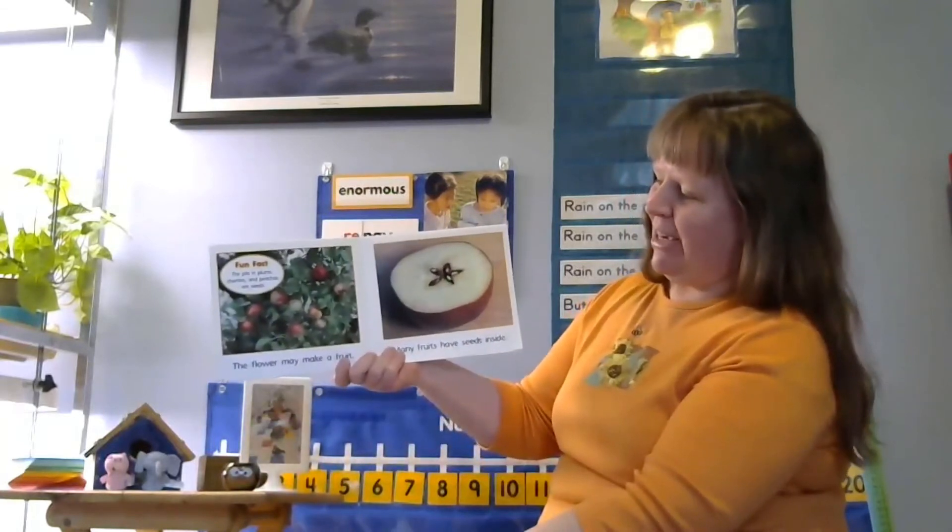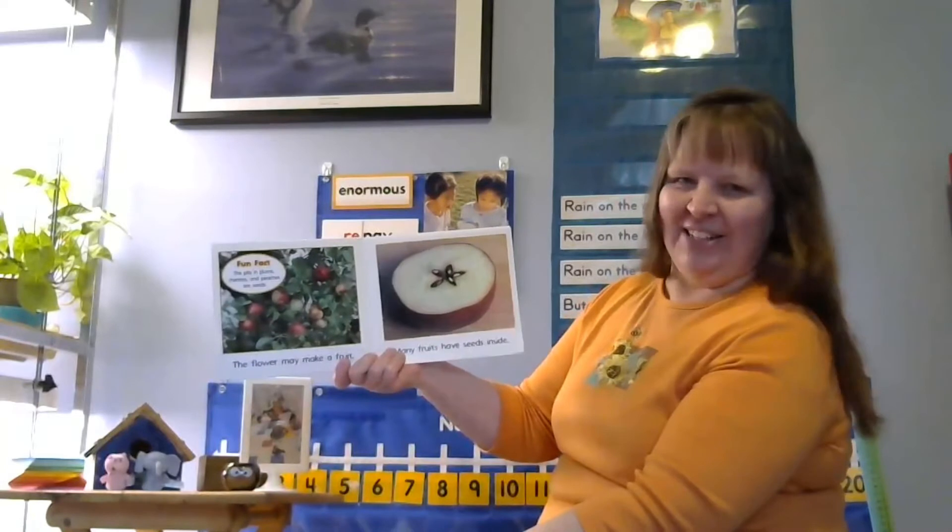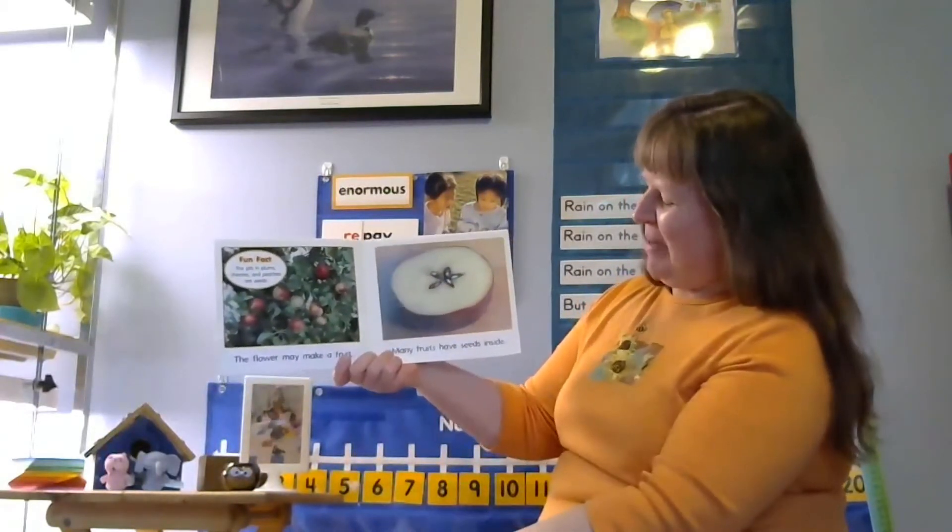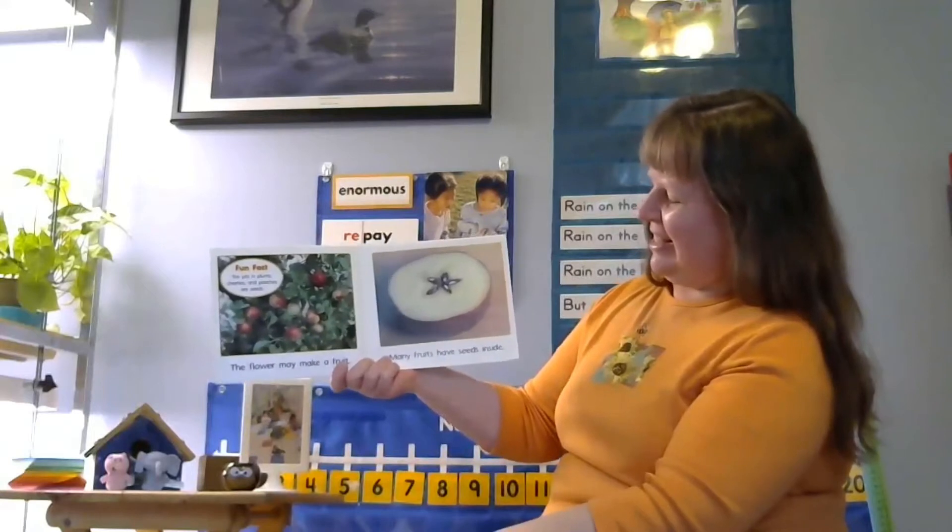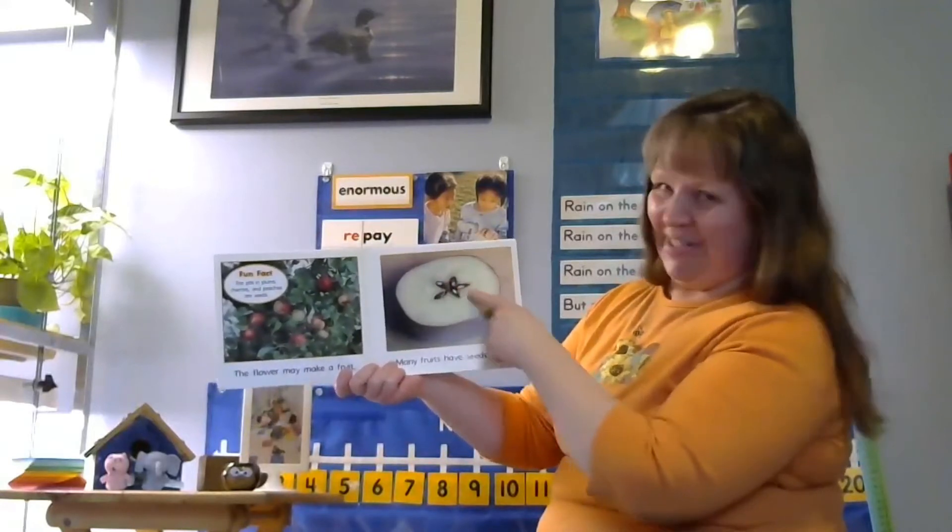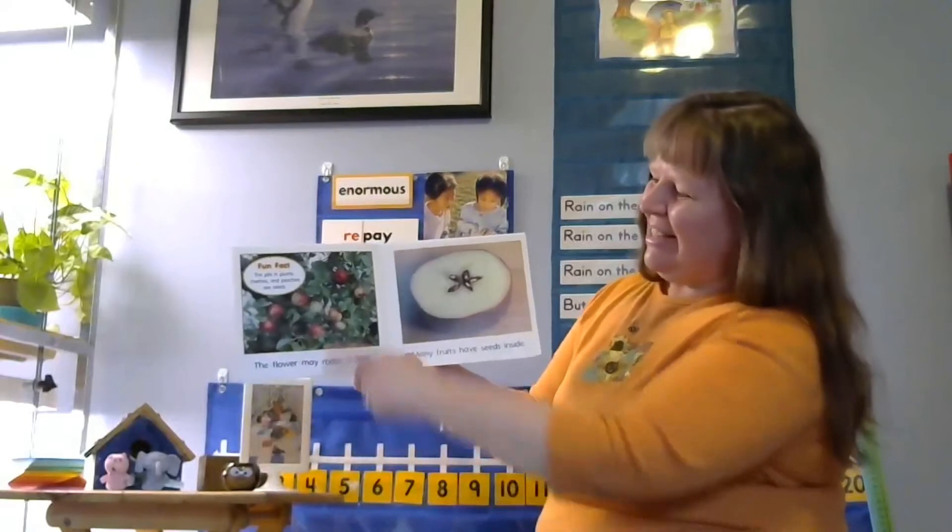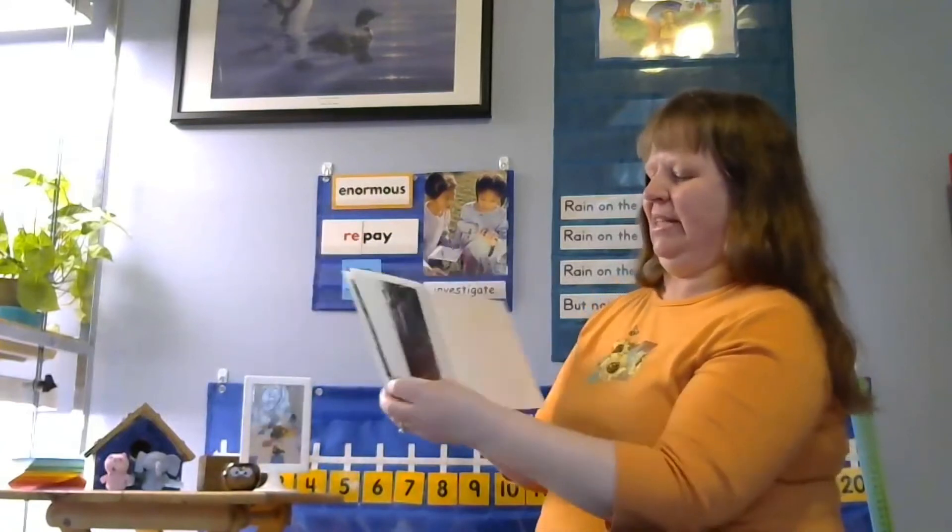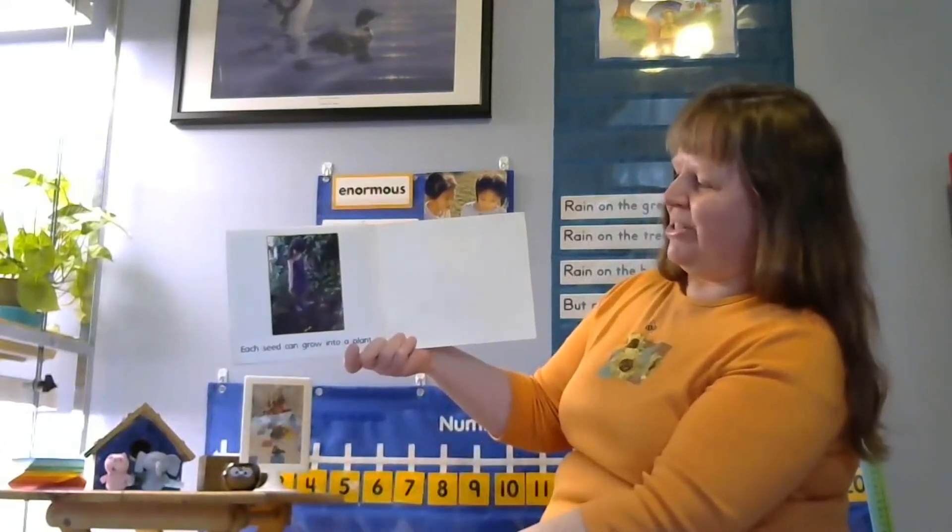The flower may make a fruit. And you know what kind of tree that is. An apple tree. Many fruits have seeds inside. Remember when we cut open the apple and found the seeds inside? It says the pits in plums, cherries, and peaches are seeds. Each seed can grow into a plant.